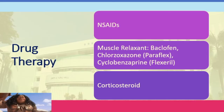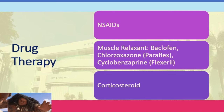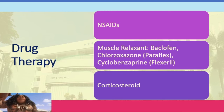For drug therapy, NSAIDs are given for pain. Muscle relaxants are also given because of the paravertebral muscle spasms — these include baclofen, chlorzoxazone, and cyclobenzaprine. Chlorzoxazone is a centrally acting muscle relaxant. All of them treat muscle spasms resulting in pain or discomfort. Commonly, these medications act on the spinal cord by depressing the reflexes. Corticosteroids are given to stop the inflammatory processes.